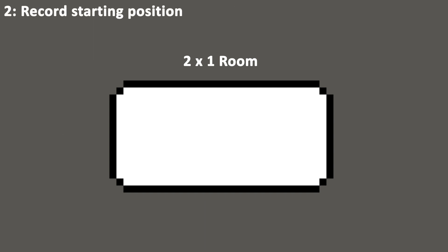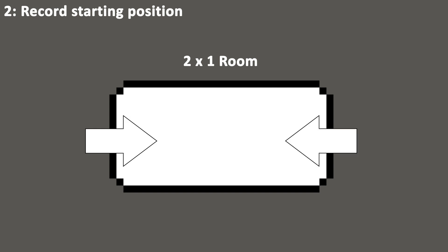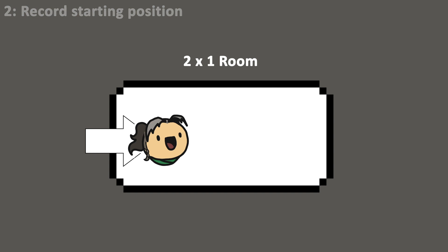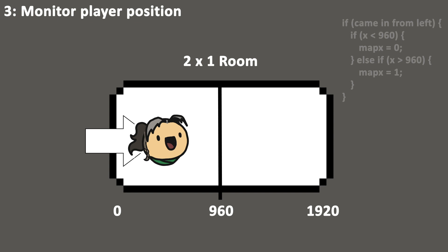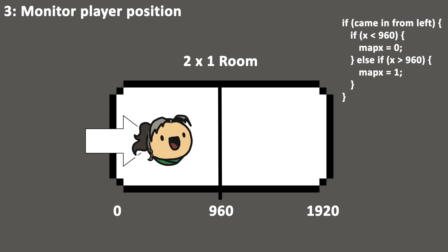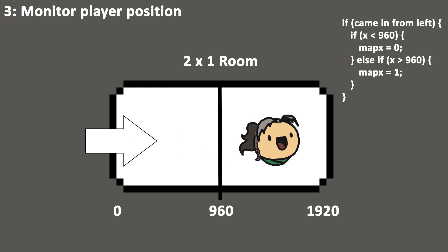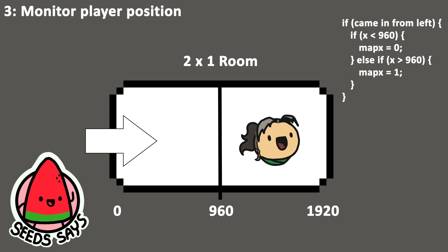Next, we record our starting position — did we come in from the left or the right? Let's say we came in from the left. Now all we have to do is keep track of the player's position in relation to the halfway point in the room. The condition looks something like this: if we came in from the left and our x is less than 960, keep our mapX as is. If our x is greater than 960, add 1 to our mapX.